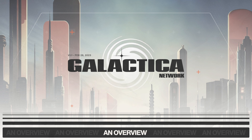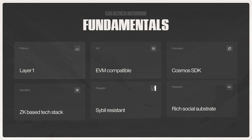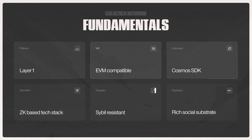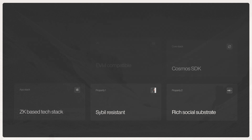Let's start with the basics. Galactica Network is an L1 EVM-compatible chain based on the Cosmos SDK, and utilizes a highly synergistic, zero-knowledge-based tech stack. Our protocol introduces sufficient civil resistance and social substrate for verifiable humans to begin transacting via their reputation, in an effort to move away from the hyper-financialization of legacy systems and towards a merit-driven future.